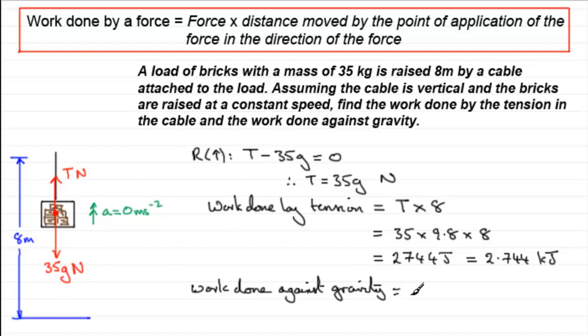So the work done against gravity, 35g, times 8, is exactly the same result as we had up here. 2744 joules, or 2.744 kilojoules.